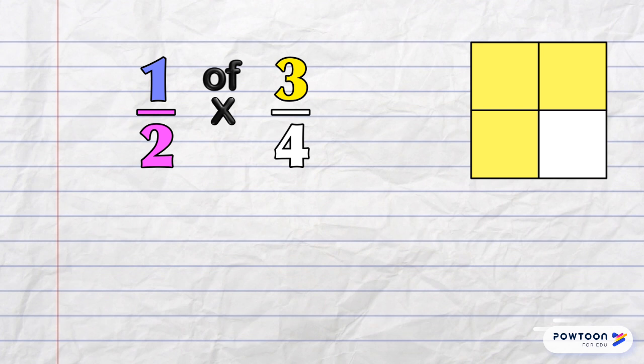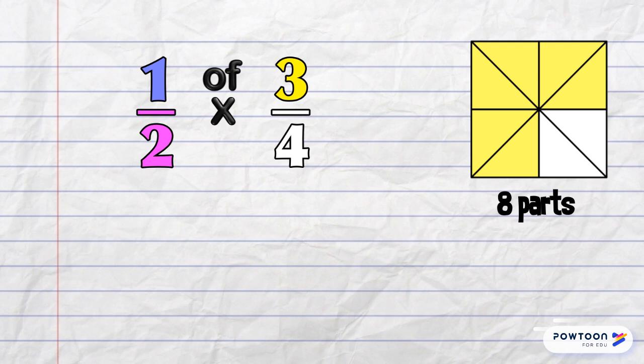This diagram represents 3 quarters. To find half of everything here, I can cut each piece in half like this. I had 4 parts because it was in quarters, and now those are halved, so I've got 8 parts.